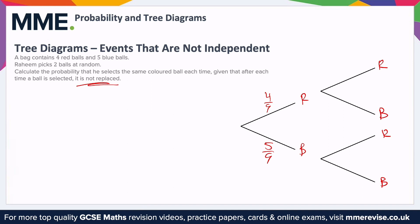For the second draw, if we drew red on the first one, there would only be three red left, and only eight balls left in total — you had nine originally, one's been taken out and not put back. So that's three over eight for red. The number of blue balls will have stayed the same because we drew a red on the first one, but the total has gone down, so that's five eighths. These two add up to one.